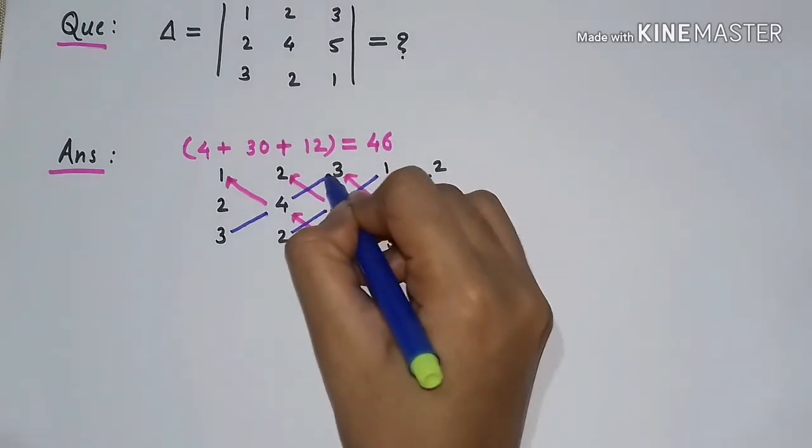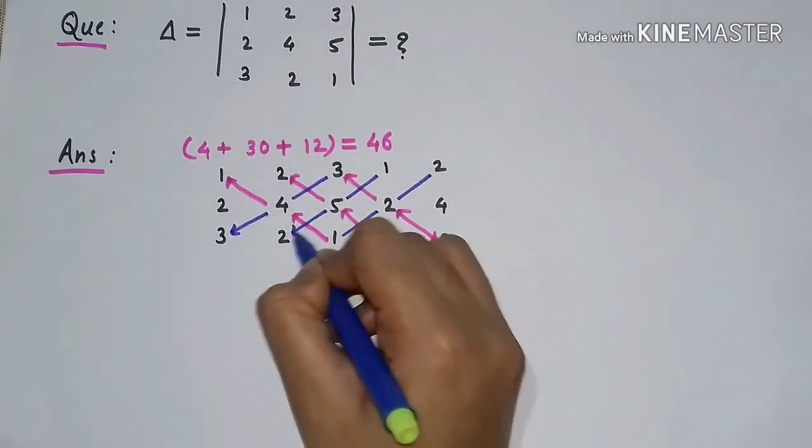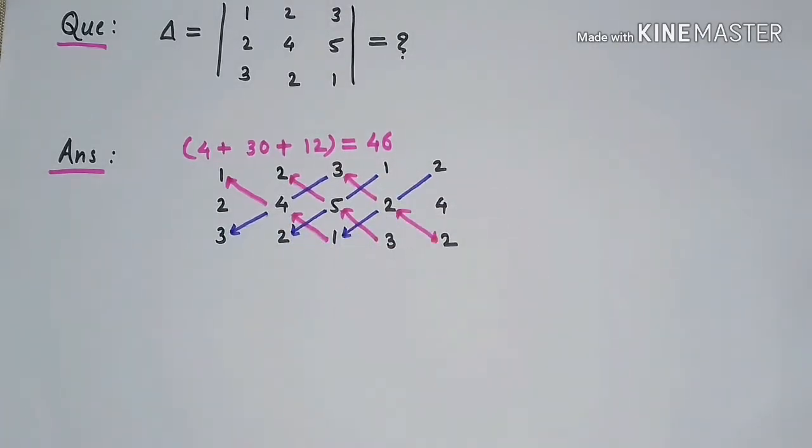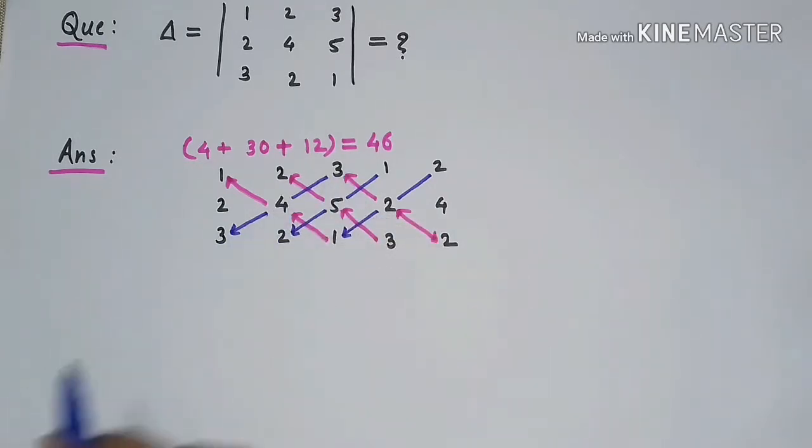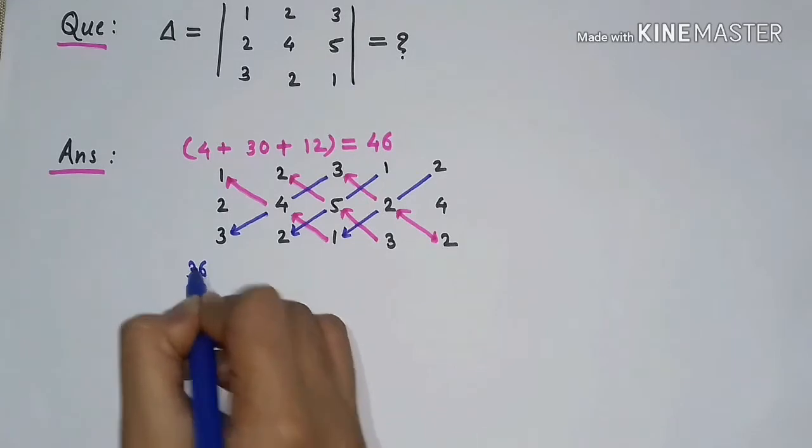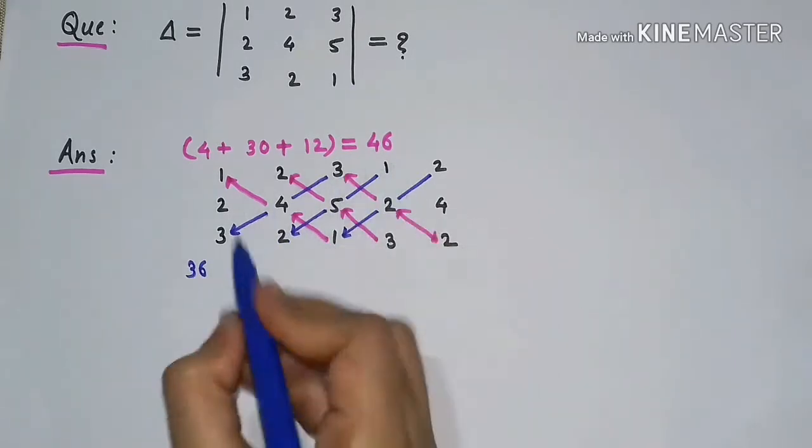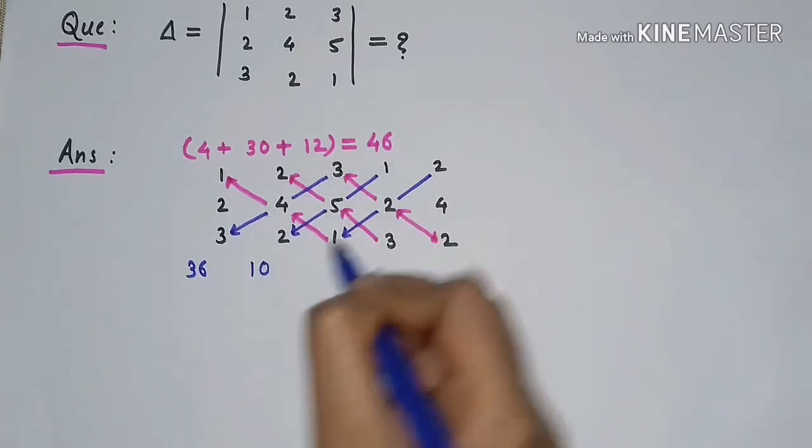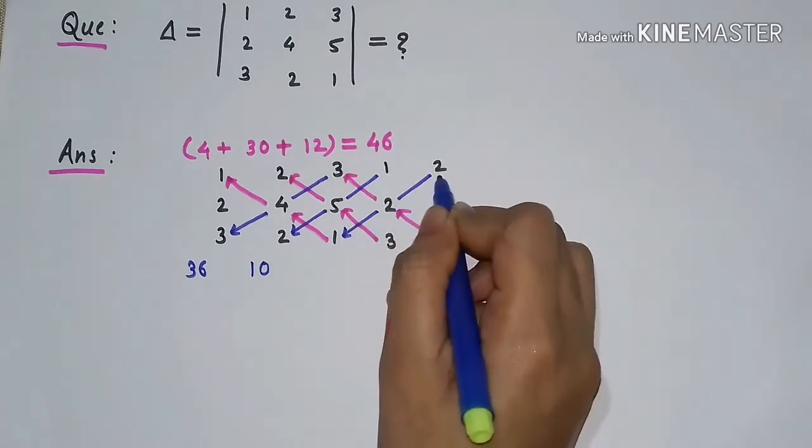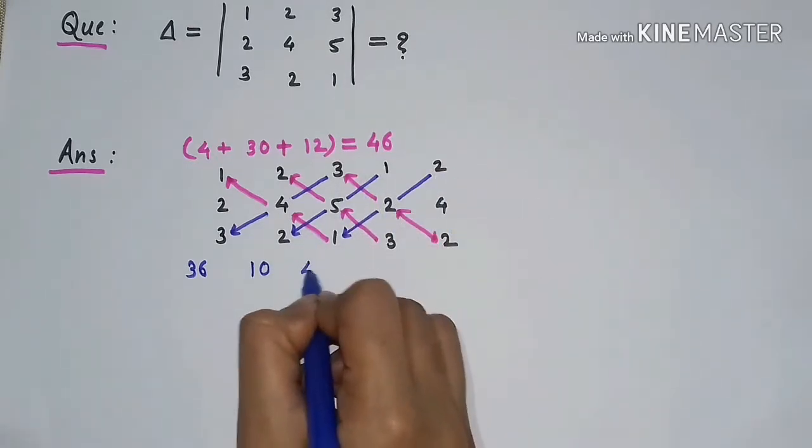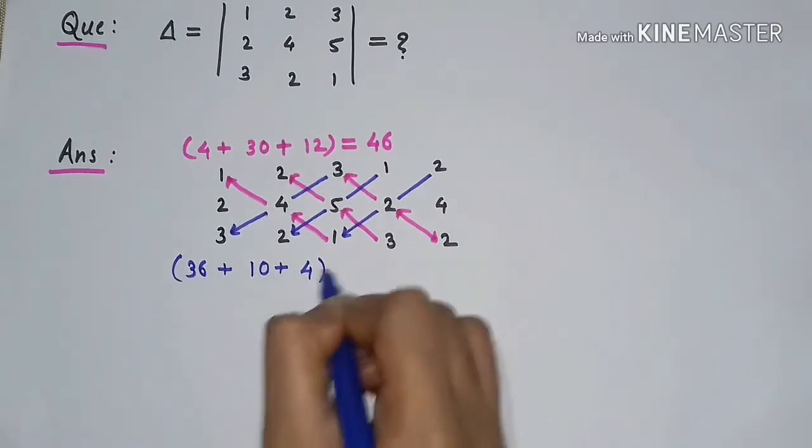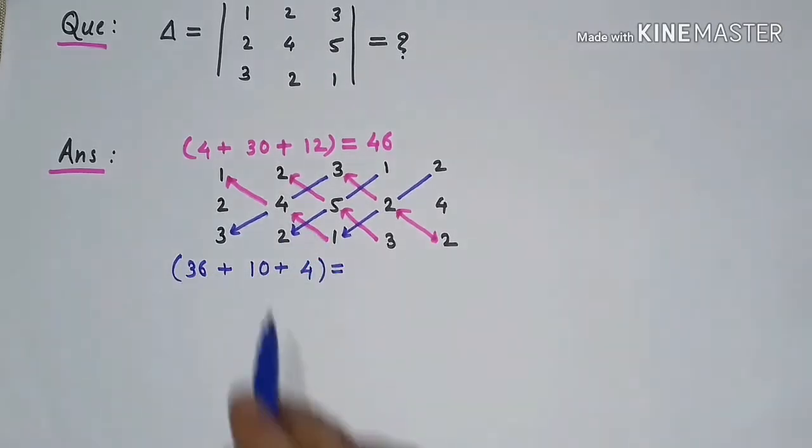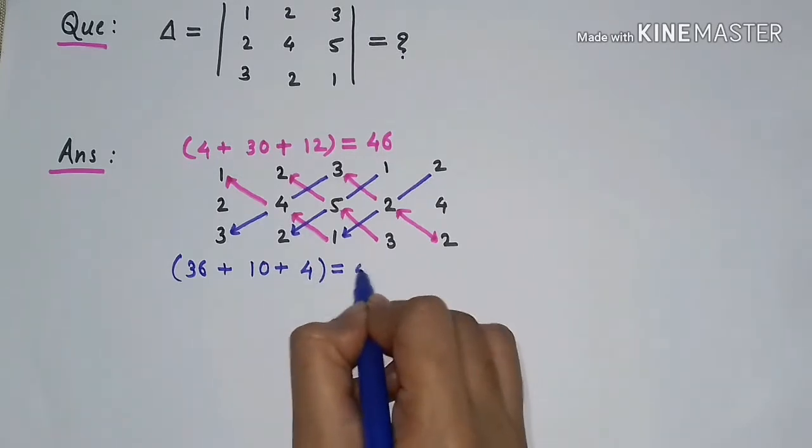Now we have to multiply again along the diagonals. So 4 times 3 is 12, times 3 is 36, 5 times 2 times 1 is 10, 2 times 2 times 1 is 4. Add these multiplications. The sum is 36 plus 10 plus 4, which is 50.